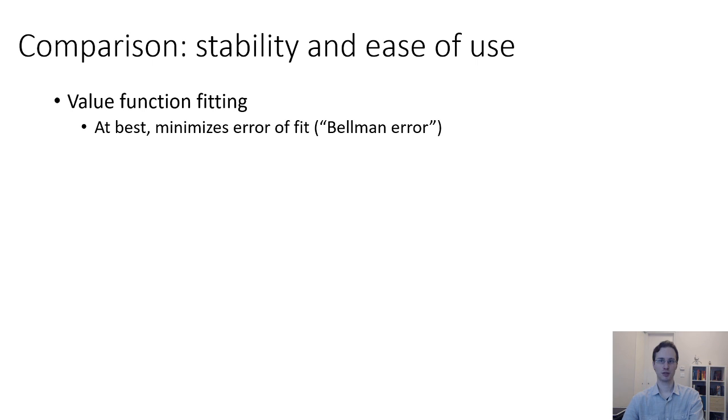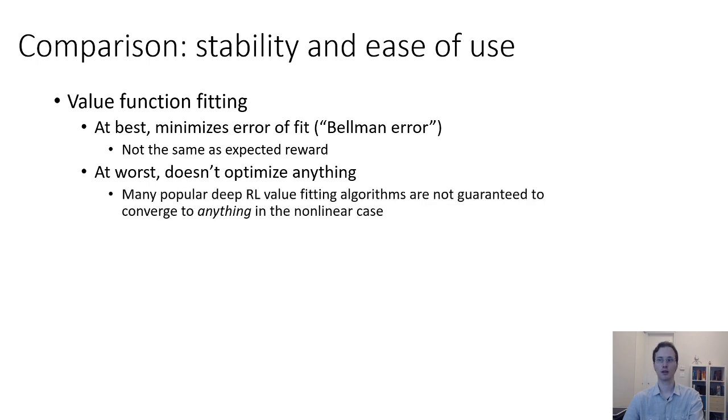Value function fitting is a fixed-point iteration, and at best it minimizes error of fit. It minimizes what's called Bellman error, meaning, is your value function predicting values accurately? But that's not the same as saying, does your value function produce a policy with good rewards? And at worst, value function fitting doesn't even minimize the Bellman error. At worst, it actually might even diverge. Many popular deep RL value fitting algorithms are not guaranteed to converge to anything in the nonlinear case, in the case where you use neural networks.